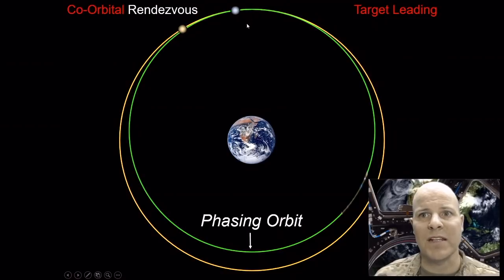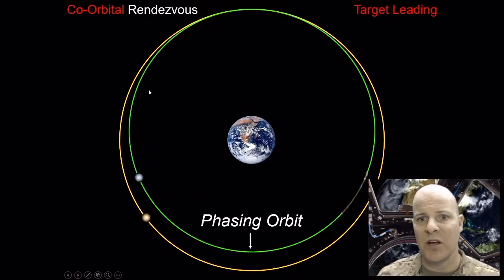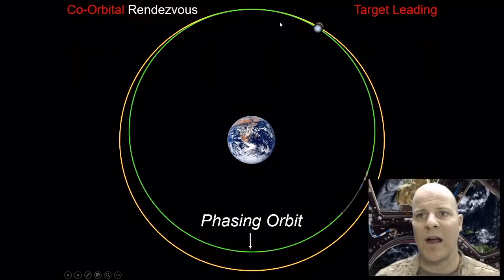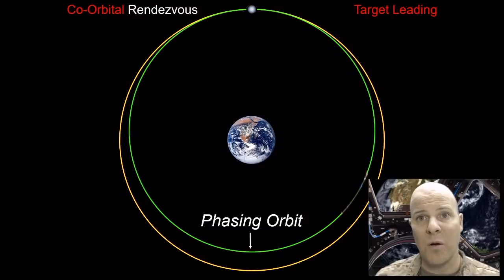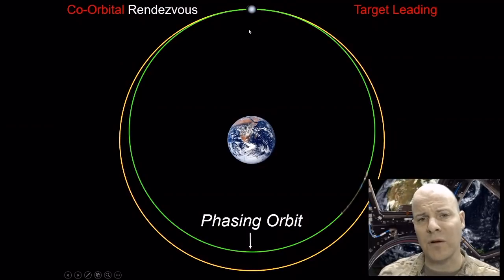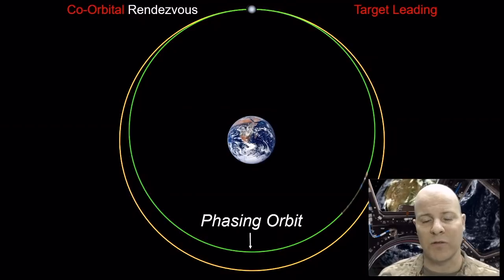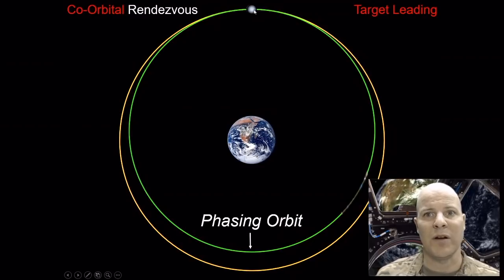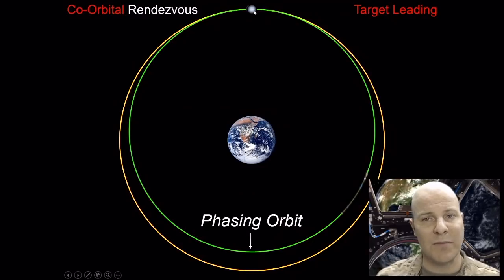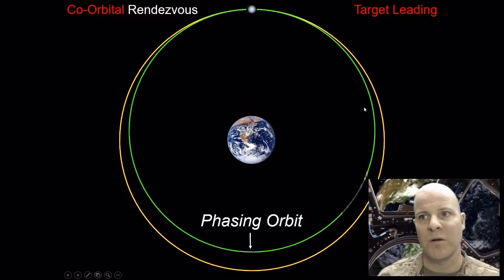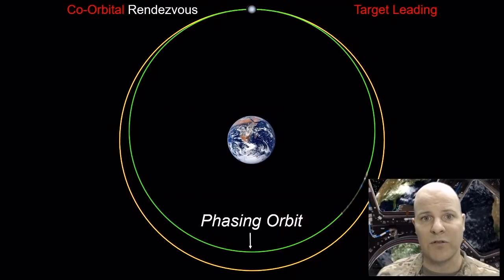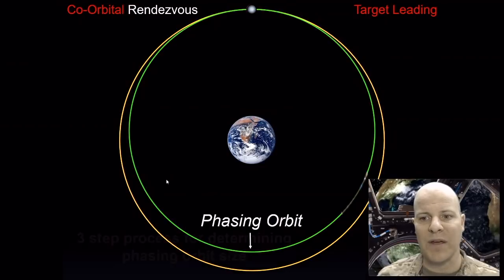The phasing orbit is sized such that it takes you exactly one complete period to go around, which is the same time it takes the target spacecraft to travel from its initial position to the rendezvous point. This is what a co-orbital rendezvous looks like. You might think it only involves one burn to jump onto the phasing orbit, but without a second burn you'd stay on the smaller orbit — so it also involves two burns, just like coplanar rendezvous.